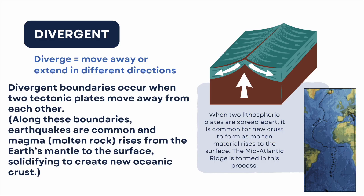Divergent means to move away or extend in different directions. Divergent boundaries occur when two tectonic plates move away from each other — you can see the arrows showing that here. Along these boundaries, earthquakes are common and magma, or molten rock, rises from the Earth's mantle to the surface, solidifying to create new oceanic crust. When two lithospheric plates spread apart, new crust forms as molten material rises to the surface. The mid-Atlantic Ridge is formed in this process.